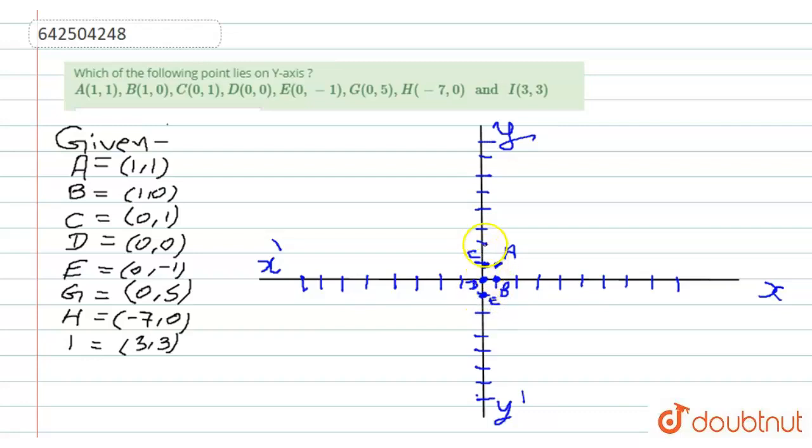G is (0,5), counting 1, 2, 3, 4, 5, this is G. H is (-7,0), so 1, 2, 3, 4, 5, 6, 7 on the negative side, this is H. And (3,3), this is 1, 2, 3 and 1, 2, 3, so this is I. And in the question,